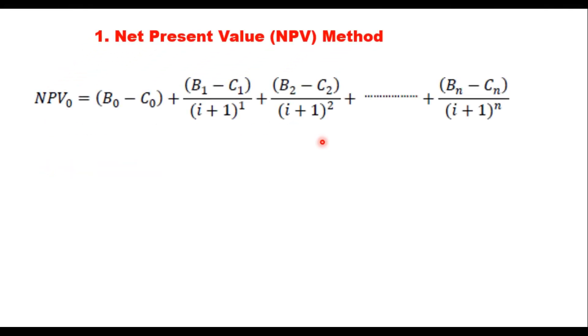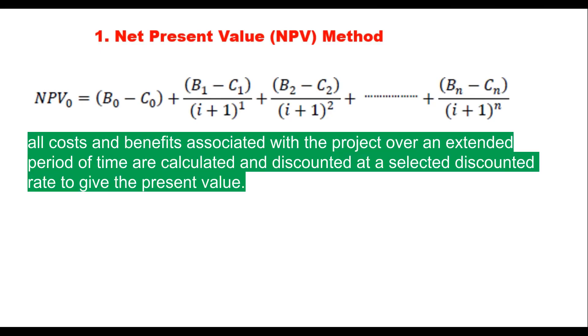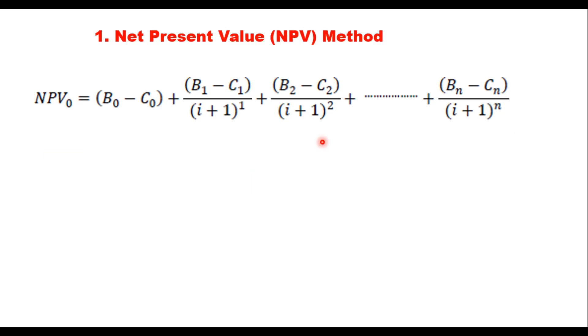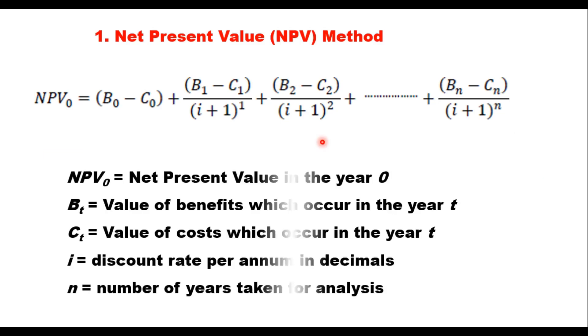The first is net present value method. In this method, all costs and benefits associated with the project over an extended period of time are calculated and are discounted at a selected discount rate to give the present value. Benefits are treated as positive and cost as negative, and the summation gives the net present value. Any project is considered to be viable if this NPV is positive.